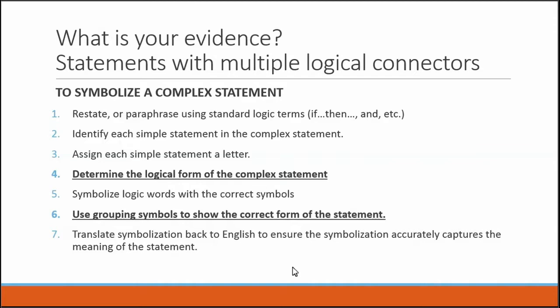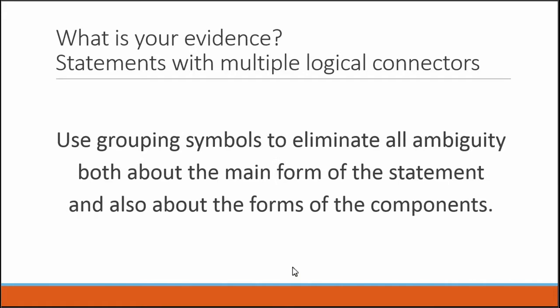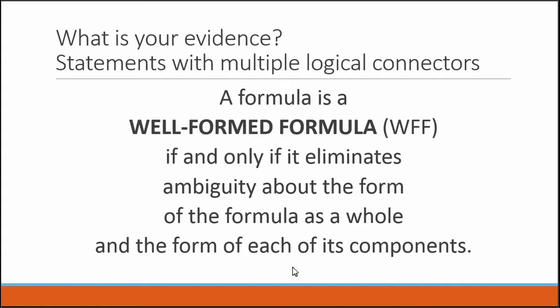You must use grouping symbols to eliminate all ambiguity — both about the main form of the statement and about the forms of the components. A formula is a well-formed formula — that is, properly written — if and only if it eliminates all ambiguity about the form of the formula as a whole and about the form of each of its components. If your formula is well-formed, there is only one way to interpret it.